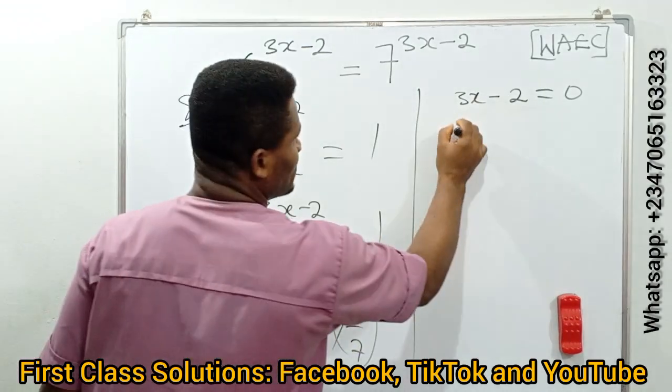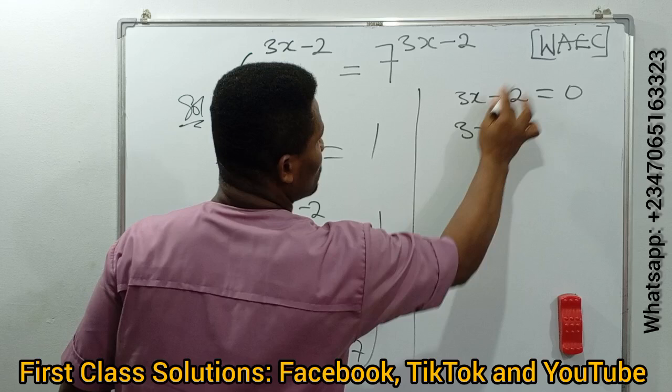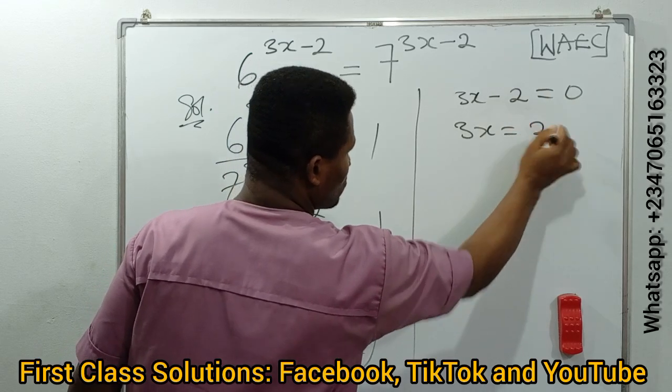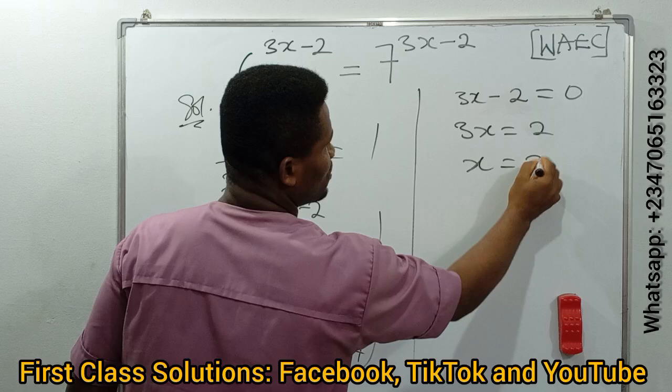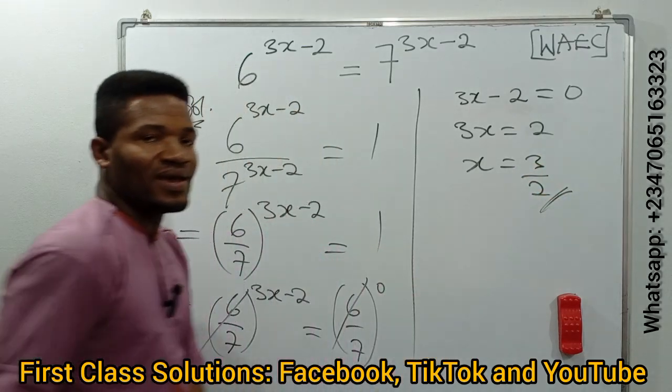According to the powers we have here, 3x - 2 = 0. If 3x - 2 = 0, then 3x = 2. Our x will now become 2/3. That is the value of our x.